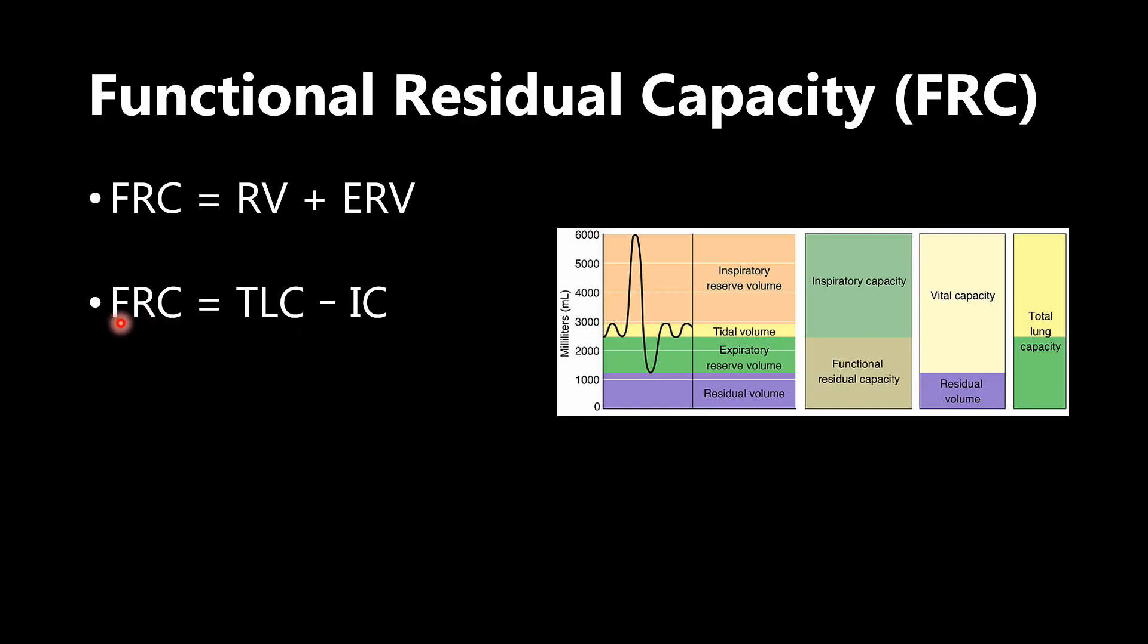Another way to calculate it, probably not as important, but it is still a way that works, is subtracting the inspiratory capacity, which we have right here, from total lung capacity. That would also give you the functional residual capacity.